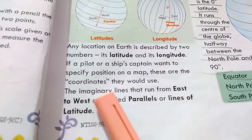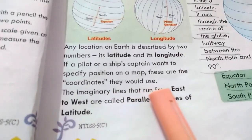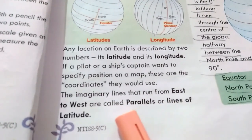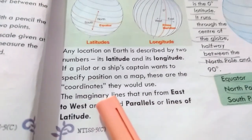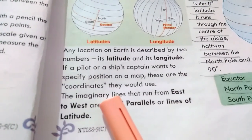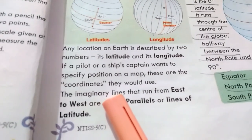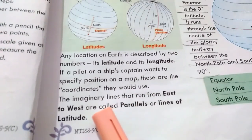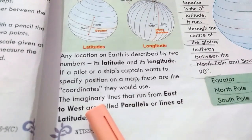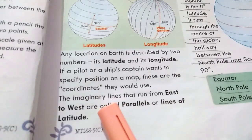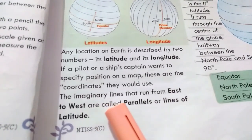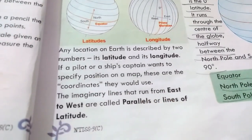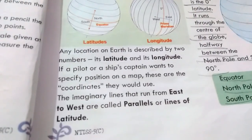The imaginary lines that run from east to west are called parallels, or lines of latitude.